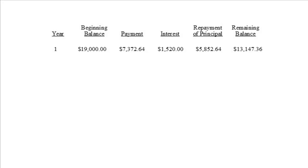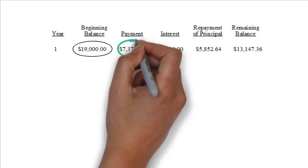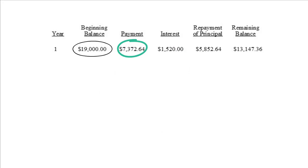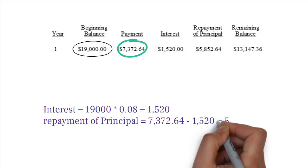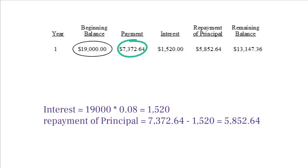In the first year, your starting loan balance is $19,000 and you make a payment of $7,372.64. In this payment, we paid $1,520 amount of interest and the rest of the money to pay off the loan. By the end of the first year, I now have $13,147.36 amount of loan outstanding, which is going to be the starting balance of the loan for the second year.